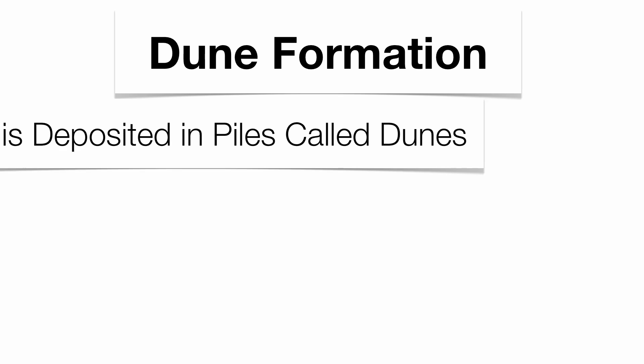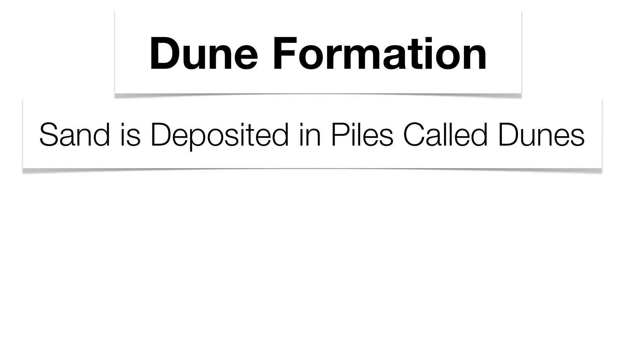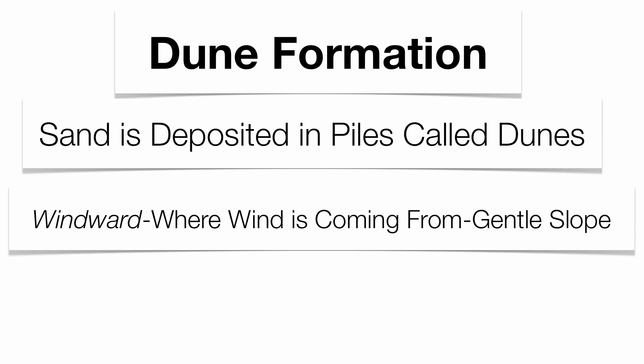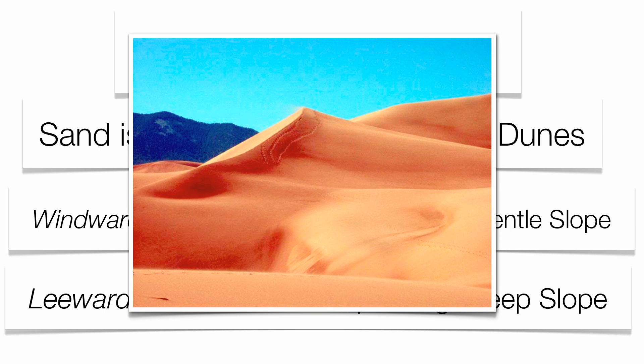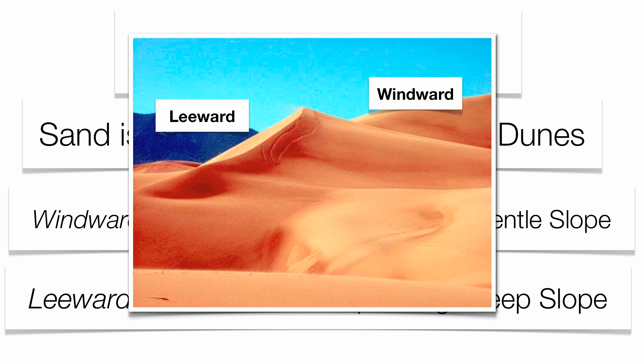With wind deposition, the big feature is dune formation. Dunes are big piles of sand that can occur not only in beach areas, but also in very dry areas like deserts. You will have a windward side, which has a very gentle slope, and a leeward side, which is very steep. It's almost like a big conveyor belt — sand is picked up on the windward side and dropped off on the leeward side.